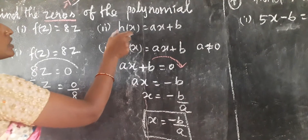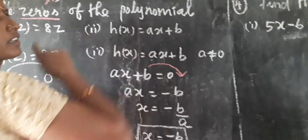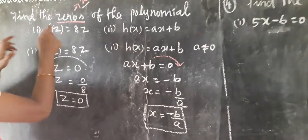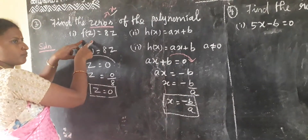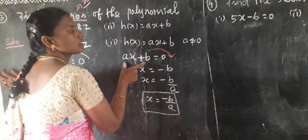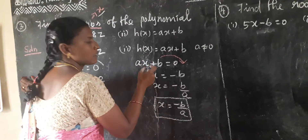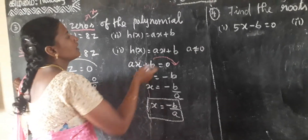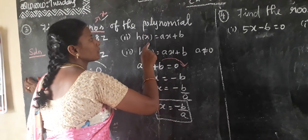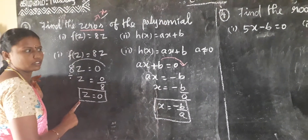See the question H of x — here x is the variable, so we have to find out the x value. See the question F of z — so we have to find out the z value. You might have doubt: why is B the value, why is A the value, why is x the value? If the question is H of x, find x value. If the question is F of z, find z value.